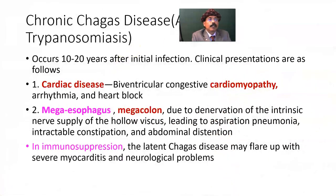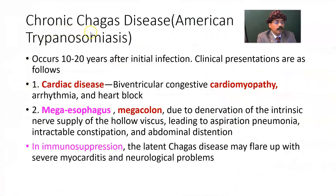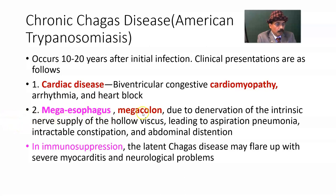Now we look at chronic Chagas disease — American Trypanosomiasis — which occurs 10 to 20 years after initial infection. Clinical presentations include cardiac disease: biventricular congestive cardiomyopathy, arrhythmia, and heart block, because the conducting system — the SA node and AV node — are also damaged. Megaesophagus, a very wide esophagus, and megacolon, a very wide colon or large intestine, develop due to denervation of the intrinsic nerve supply of the hollow viscera, mainly the parasympathetic nerves — the myenteric plexus and the submucosal plexus.